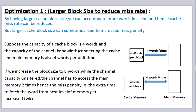But larger cache block size can sometimes lead to increased miss penalty. Suppose the capacity of a cache block is 4 words and the channel bandwidth connecting cache and main memory is 4 words per unit time. If we increase the block size to 8 words while the channel capacity remains unaltered, the channel has to access main memory 2 times, hence miss penalty gets increased twice.